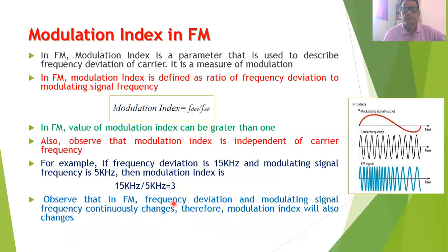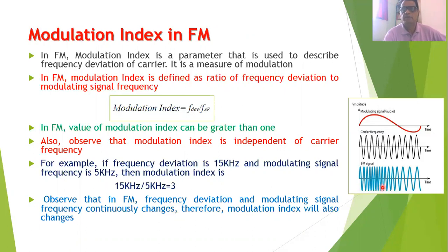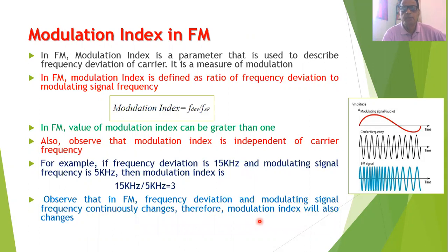In FM, frequency deviation and modulating signal frequency continuously change, and therefore the modulation index will also continuously change. As shown in this waveform, the frequency deviation is continuously changing in the FM signal, and the modulating signal frequency may also change. So if both are changing, the value of the modulation index will not be fixed — it continuously goes on changing in FM.